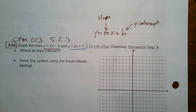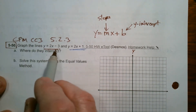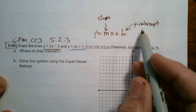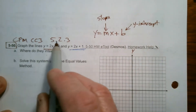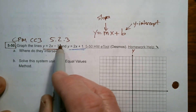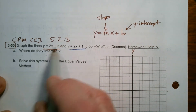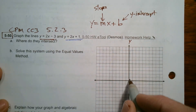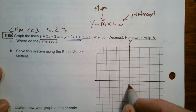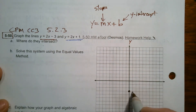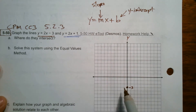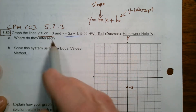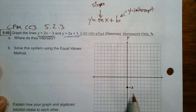Let's start with y equals 2x minus 3. We start where the y-intercept is — that's our first initial point. When x equals 0, y equals negative 3. So 1, 2, 3 down — negative 3 is where the y-intercept is.